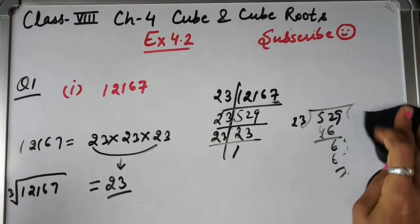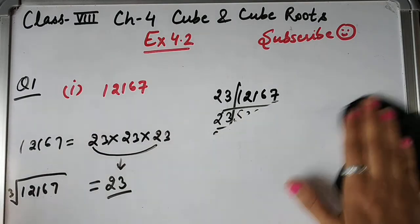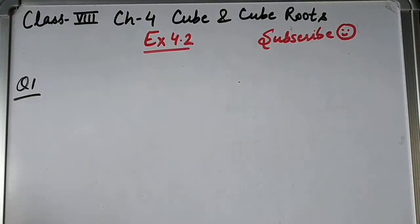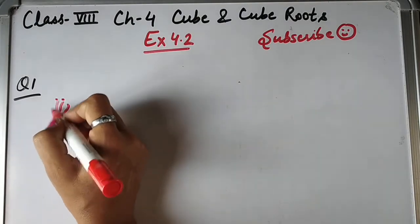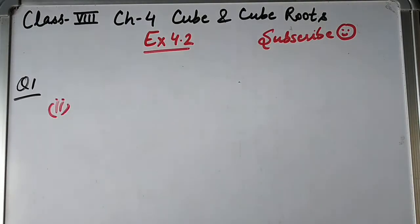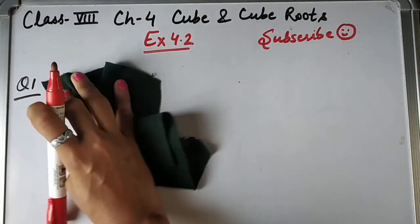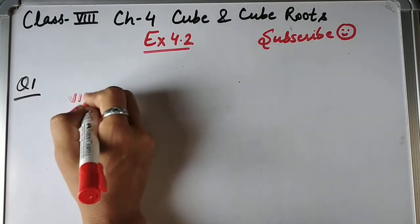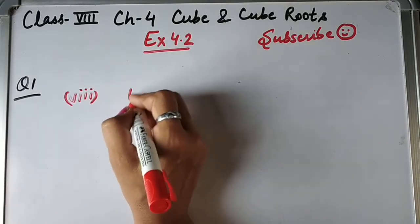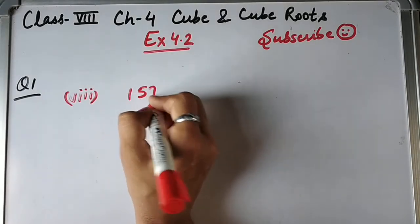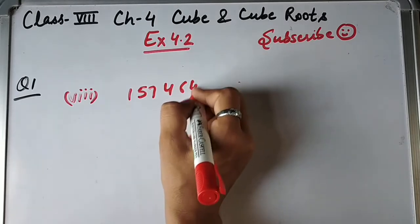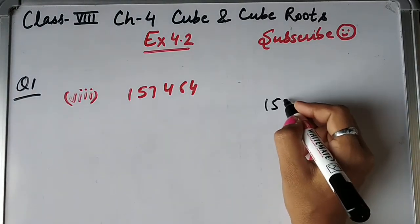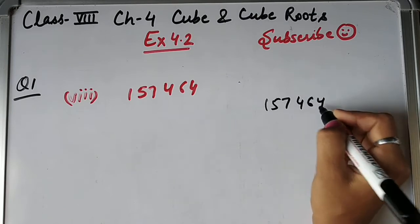That was the first part. Now let me do one more part so it becomes clearer. I'll do the 8th part for you. The number given is 157464. We have to find its cube root, so we start prime factorization.